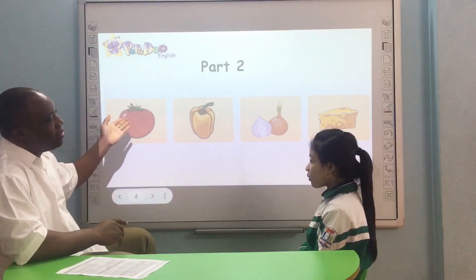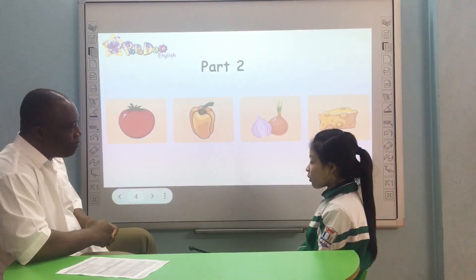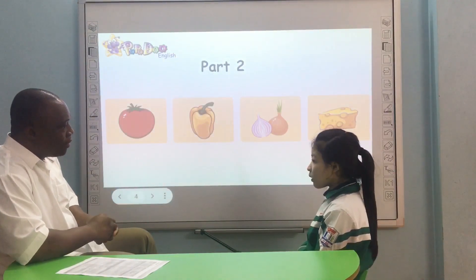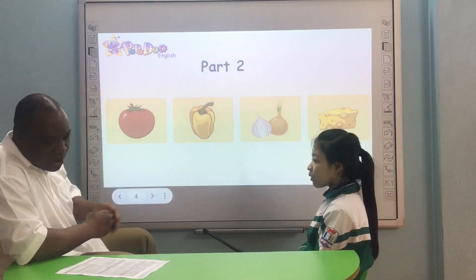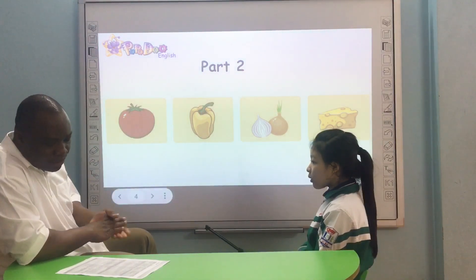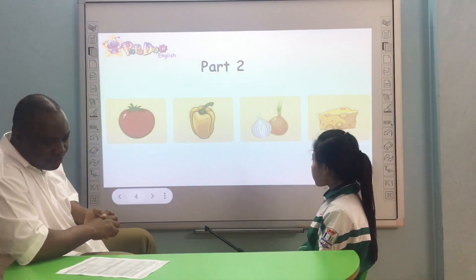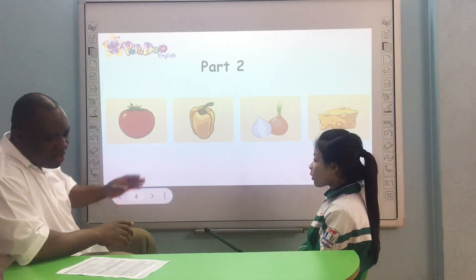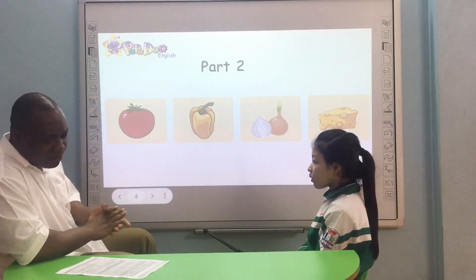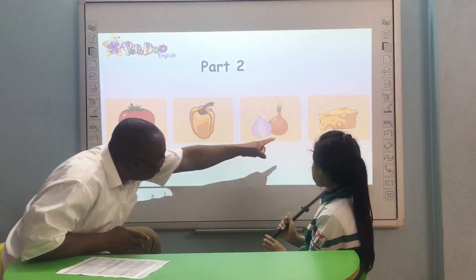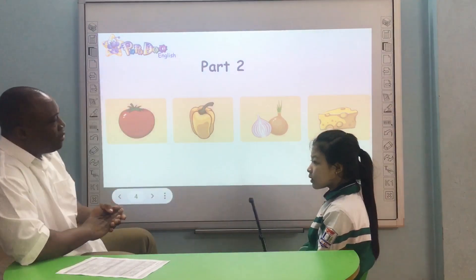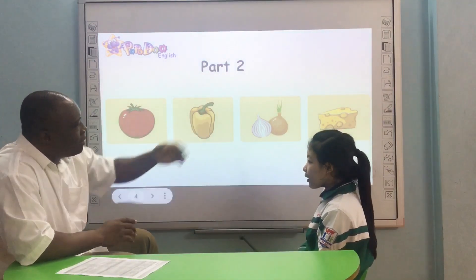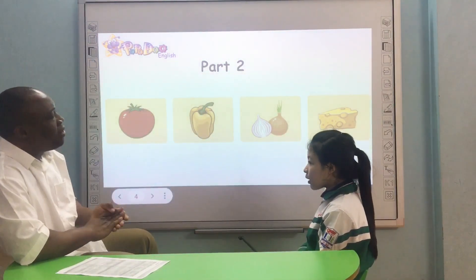Well, this one is a tomato, right. Okay? As you can see here, white. You might have a pepper, an onion — they are vegetables. But this one, the cheese, is not a vegetable. That's why the cheese is different.